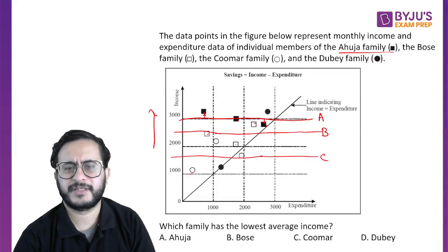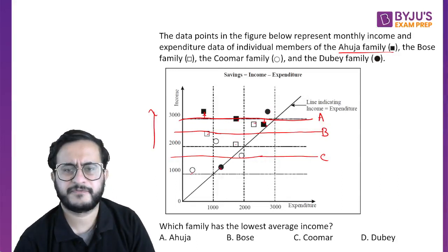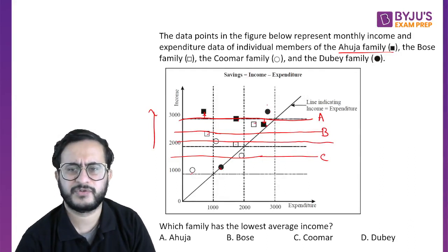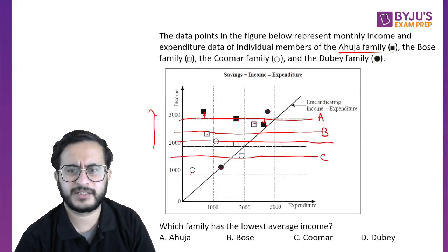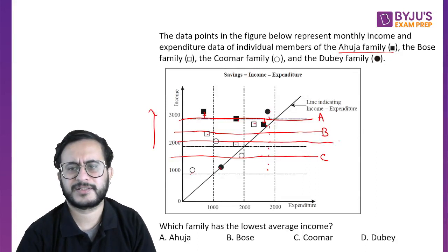The fourth family is the Dube family. If you see, this is one point and this is the second one. Roughly somewhere in between, this would be the average line. Do not read the values — just see the center point. You can assume the distance between the points, and the center line will pass through this.